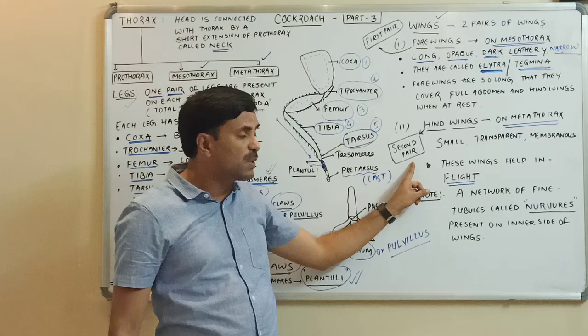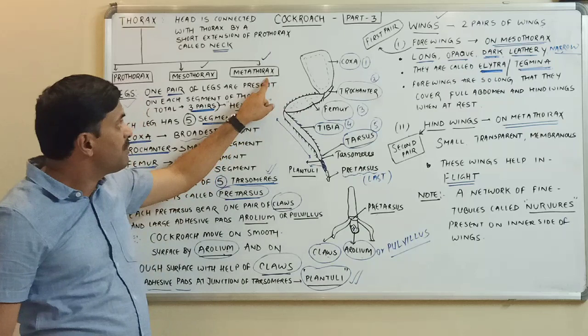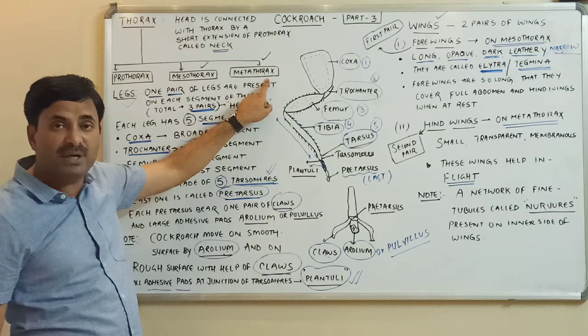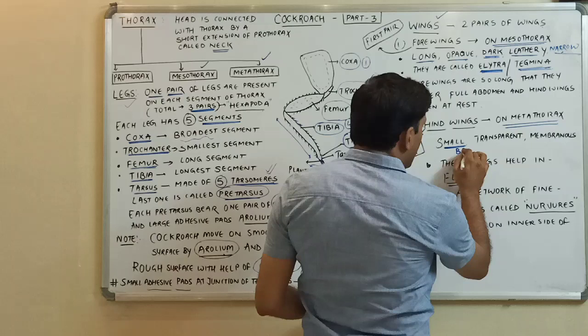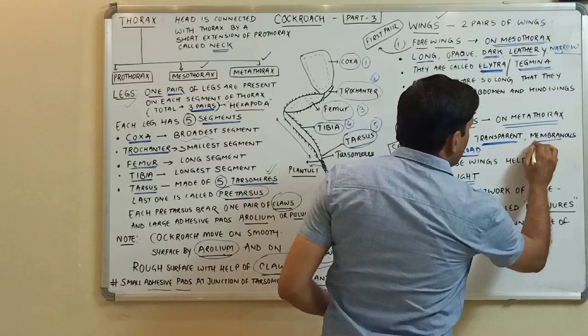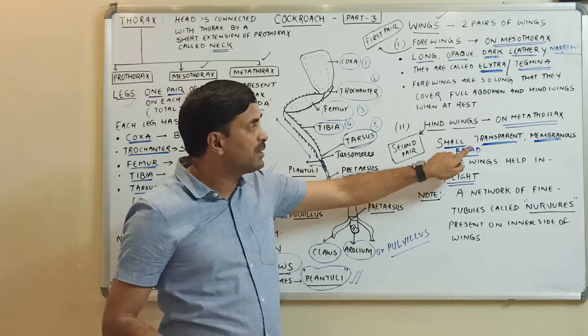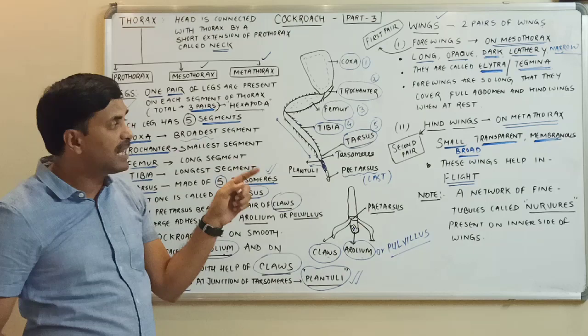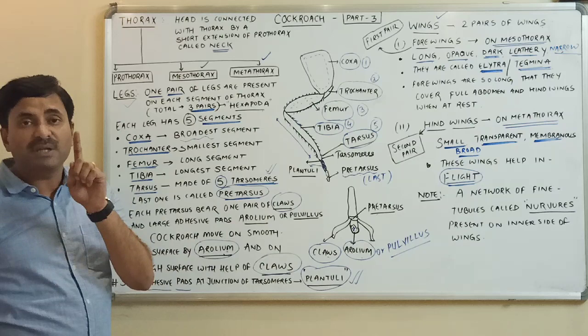The hindwings are the second pair of wings, present on the metathorax region, and are hence called metathoracic wings. They are small, broad, transparent, and membranous. These hindwings help in flight.